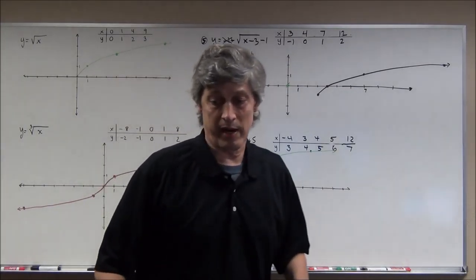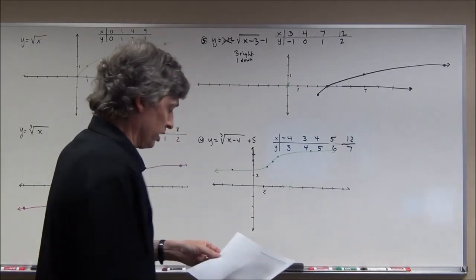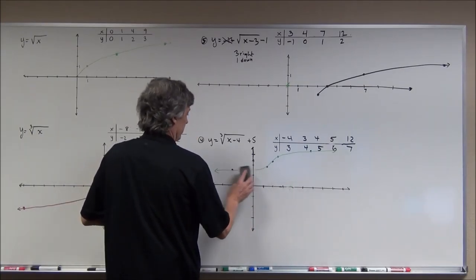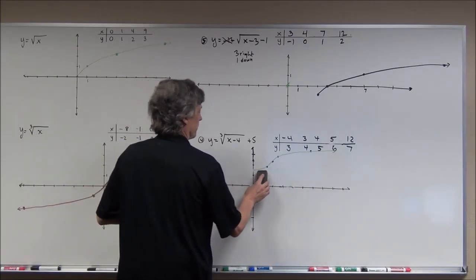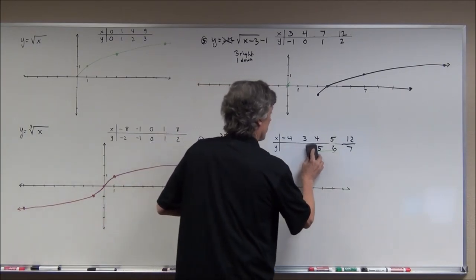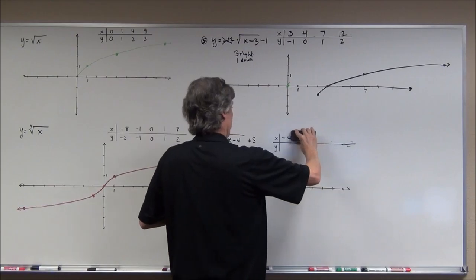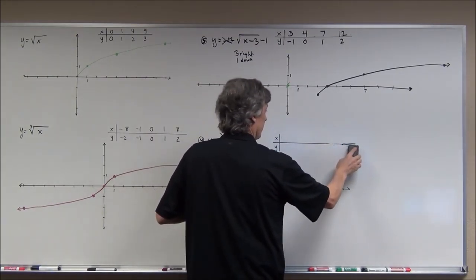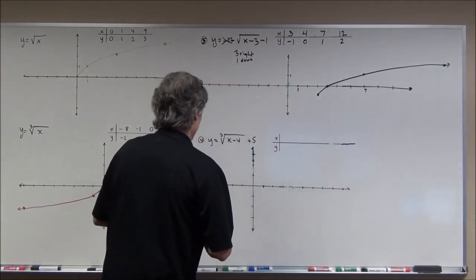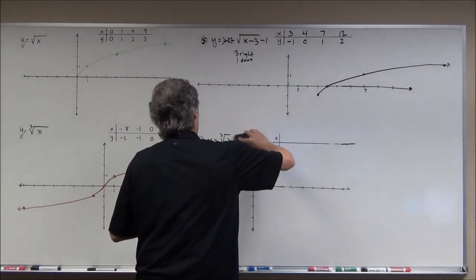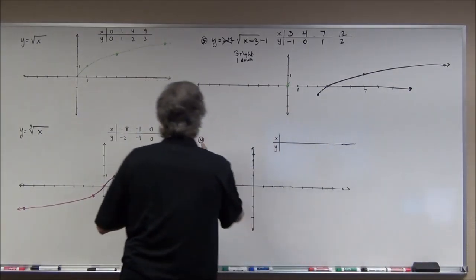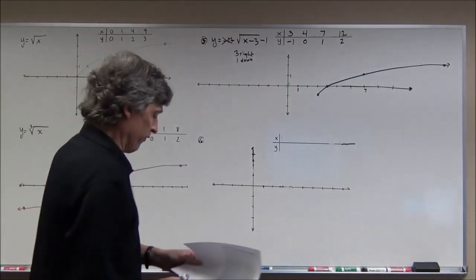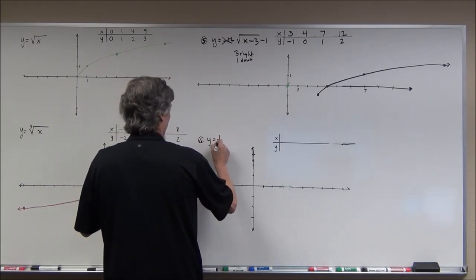Problem 6: y equals one fourth times the square root of x. That one fourth is not added or subtracted — it's multiplied. That's a dilation. This is going to squeeze it down by a factor of four — it's going to be one fourth as tall as the parent graph.